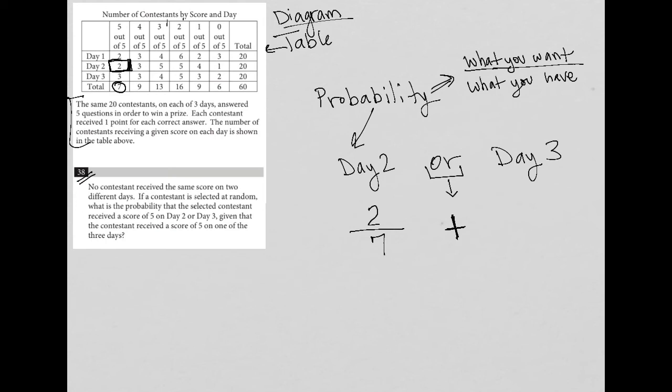Let's do the exact same thing for day 3. So, on day 3, how many contestants scored 5 out of 5? Well, that would be 3 students. So, that's what we want. Or 3 contestants, I'm sorry. And then, those 3 contestants were out of the total of 7 contestants that scored a 5 out of 5 in general.